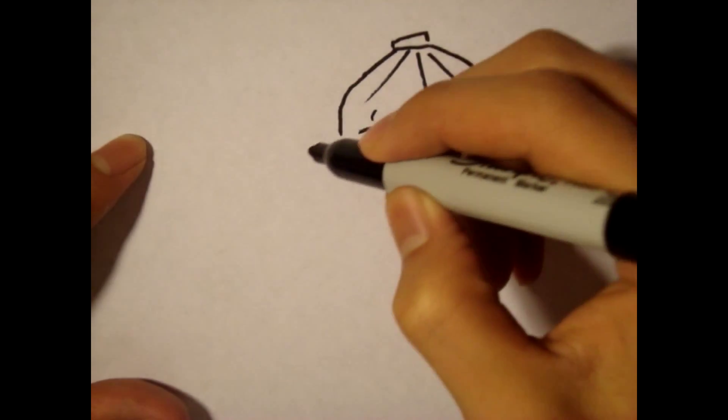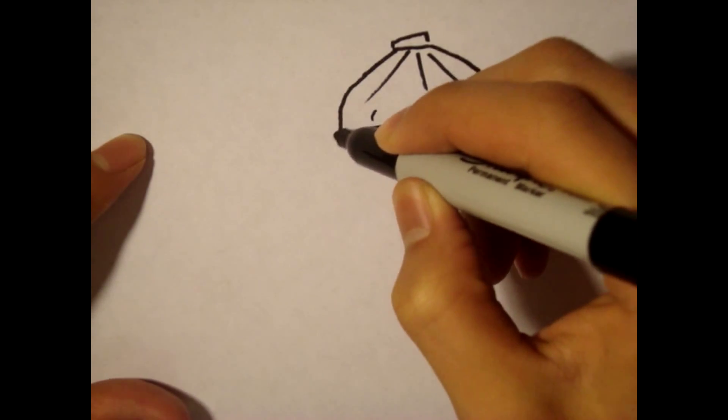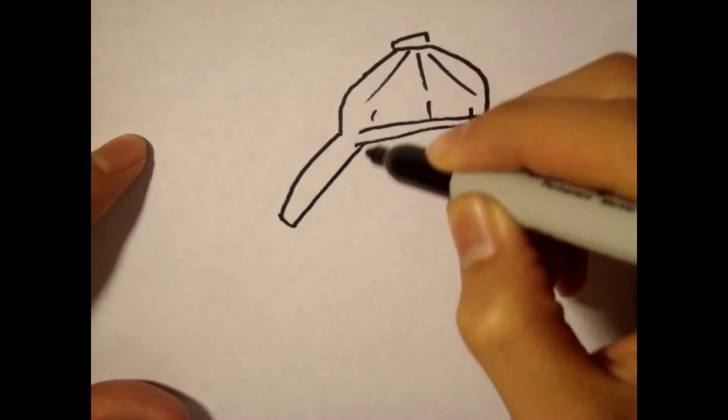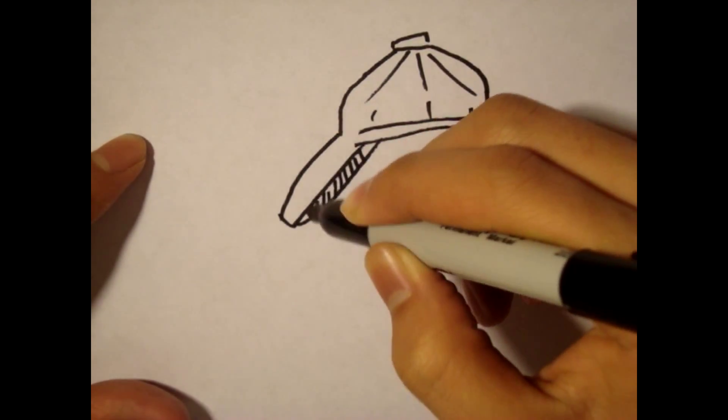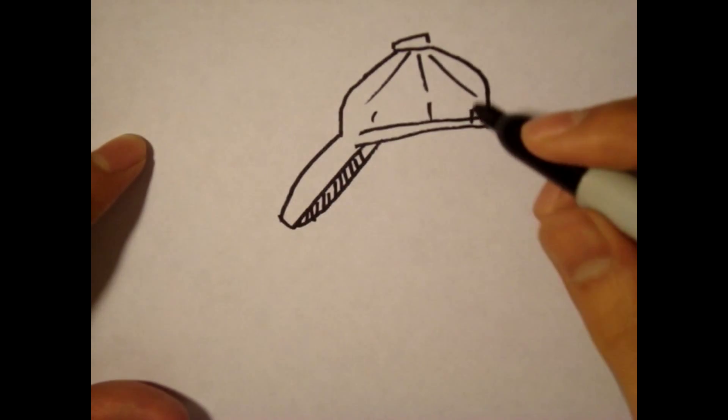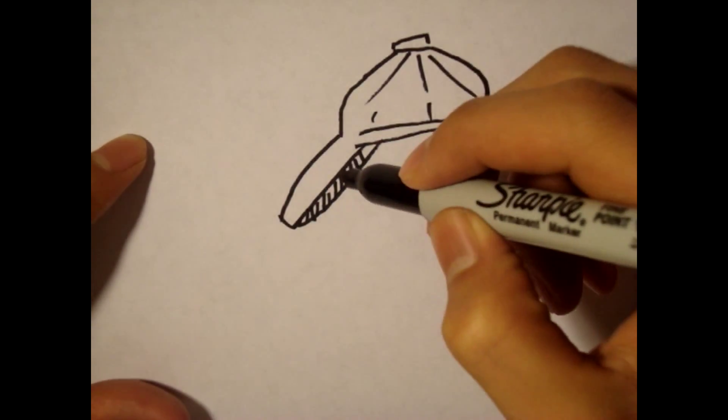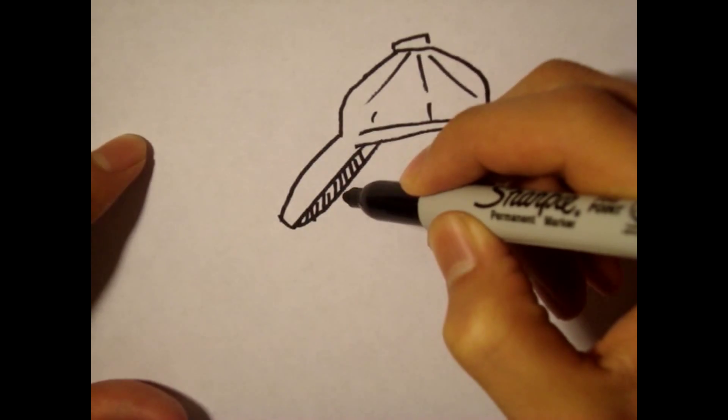And then we're gonna draw the front part of the hat that's sticking out, okay? Like that. So this is kind of looking like a triangle shape. Now we're going to draw the pig ear.